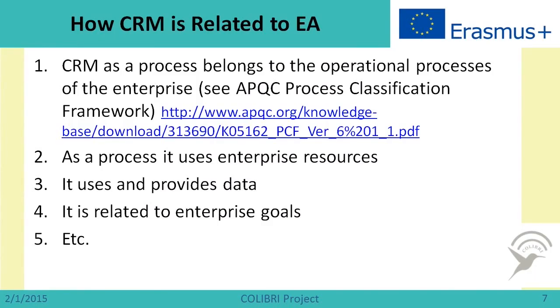Now let us see how Enterprise Architecture is related to Customer Relationship Management. CRM and Enterprise Architecture might at first seem like pretty different things, but when we consider that CRM is a process belonging to the operational processes of the enterprise — as stated, for example, by the American Productivity and Quality Center Process Classification Framework — we can already see the place of CRM within enterprise architecture.